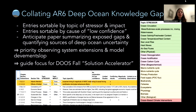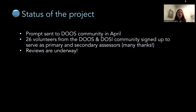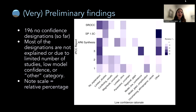We're hoping this project will reveal major gaps in our observing system that can be extended or improved, and where there are gaps in models. We're using this to guide a fall meeting with DOOS, and hoping to have all assessments in by fall. The prompt was sent to the DOOS community in April; 26 people volunteered. Reviews are underway, but I wanted to share some very preliminary findings today.